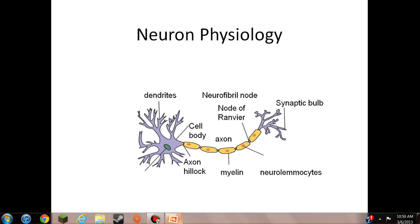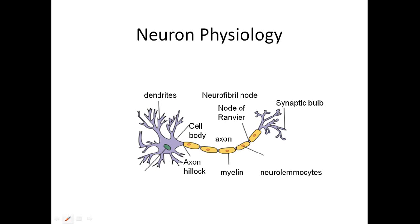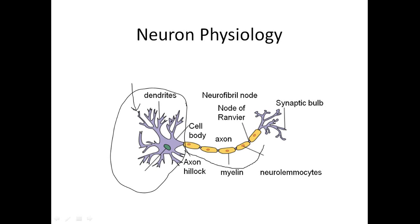The parts you need to know — this purple part is the cell body. On the cell body are the dendrites. The dendrites are like the fingers coming out, and those are where we're going to have receptors that pick up the neurotransmitters.